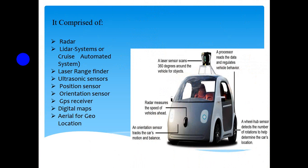It mainly comprises a radar system, cruise automatic system, laser range finder, ultrasonic sensors, position sensors, orientation sensor, GPS receiver, digital maps, aerial for geolocation detection, and other new techniques.